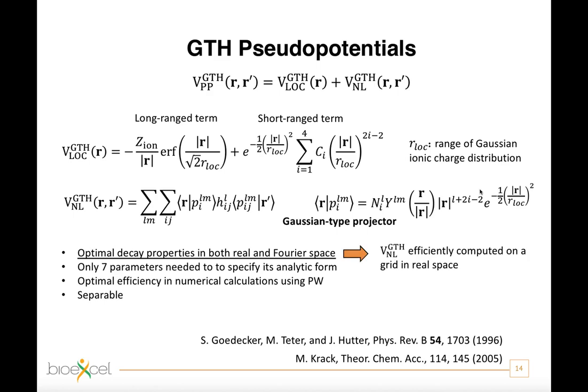Because of this property, the application of the non-local part of the pseudopotential to a wave function, usually the most computationally expensive part of the calculations involving pseudopotential, can be done efficiently on a grid in real space. And a real space integration is much faster for large systems like biomolecules than ordinary multiplication in Fourier space.